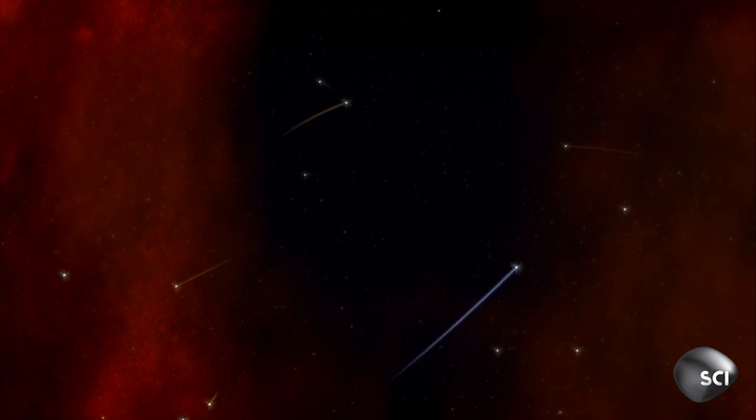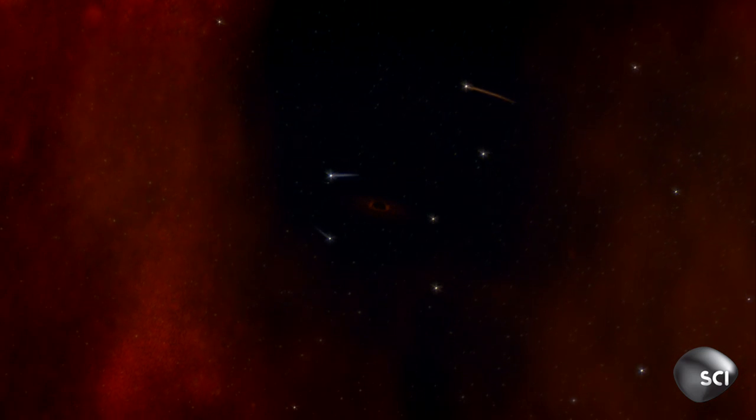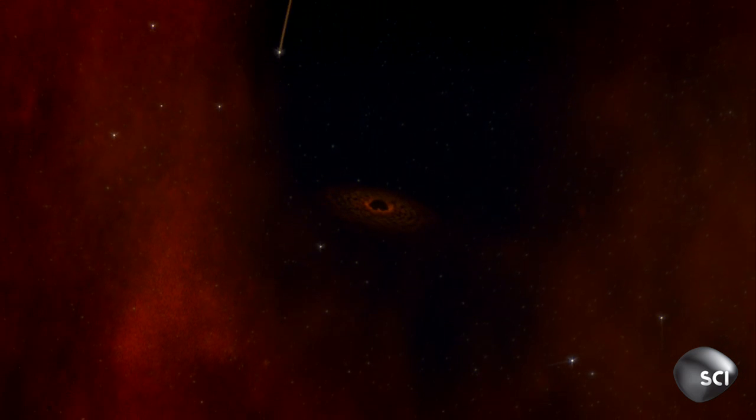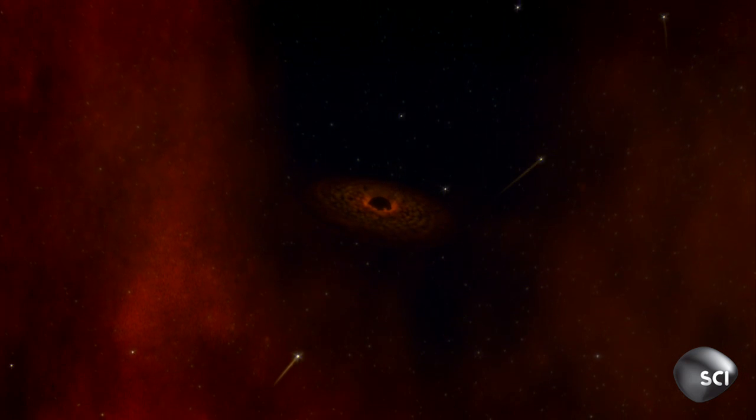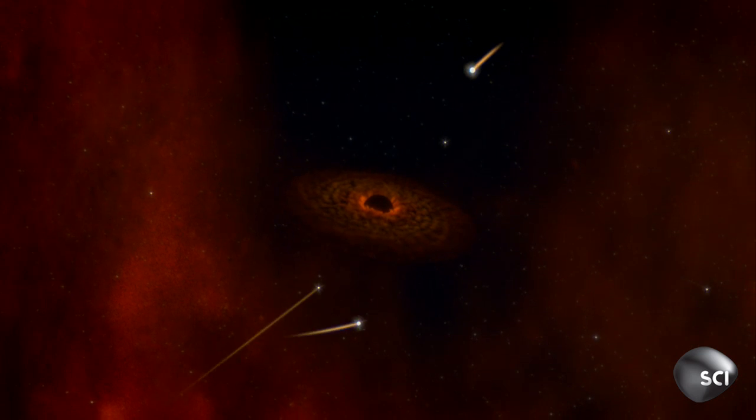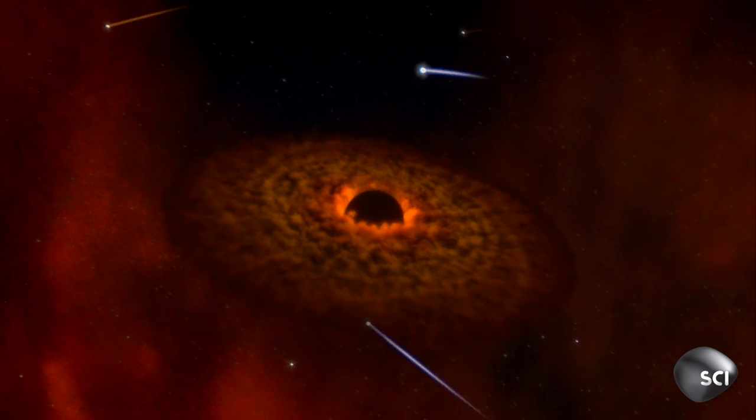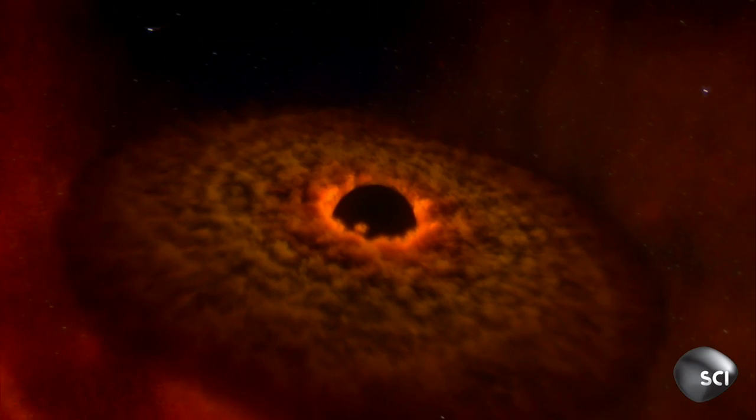Every single object in the Milky Way orbits around a single point in space: the supermassive black hole Sagittarius A star, the center and master of our galaxy.